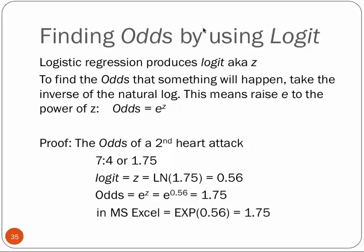So here is our example again. Our logistic regression produces the logit. We find the odds that something will happen by taking the inverse natural log. So here's how it's done. Here's our 1.75. When we took the natural log, we got 0.56. And if we go backwards now, if we take e raised to the value of 0.56, so here we see the equation here, we get 1.75.